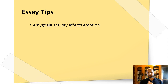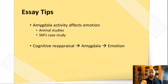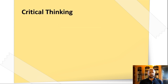For an essay question — 'to what extent do biological and cognitive factors interact in emotion?' — keep it structured. Begin with the amygdala affecting emotion, in the same order as explained here: the animal lesion studies, and also SM's case study, to show the amygdala is essential for feeling fear. Be specific about fear in that example since it wasn't looking at a range of other emotions. Interestingly, when they showed SM videos, she could feel other emotions like happiness, enjoyment, and disgust — just not fear. Then go into cognitive reappraisal and the amygdala using Uri et al., and throw in a couple of counter-arguments.